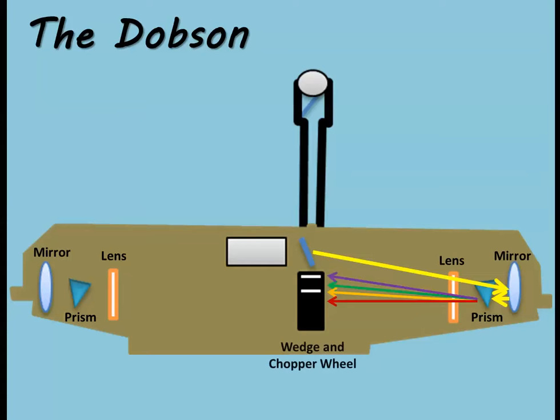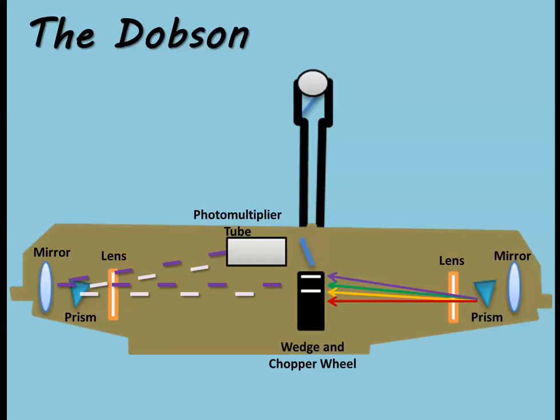This spectrum enters a wedge with slits that allows only certain wavelengths that are affected by ozone molecules through. A chopper wheel inside the Dobson acts to segment the wavelengths, so they can be measured individually.